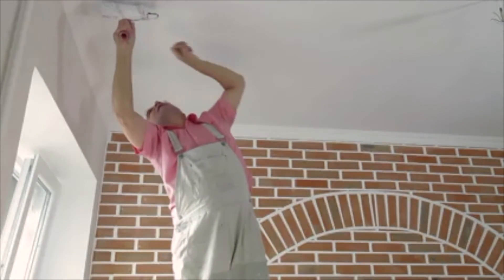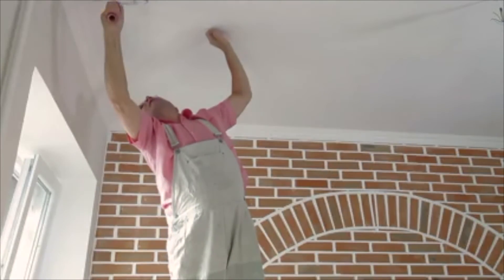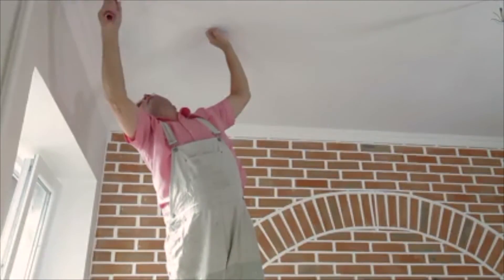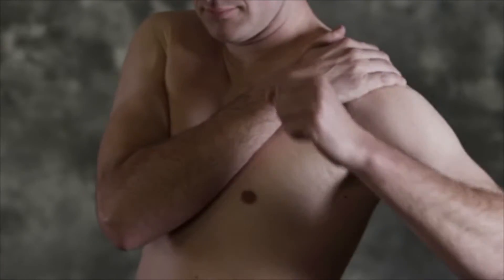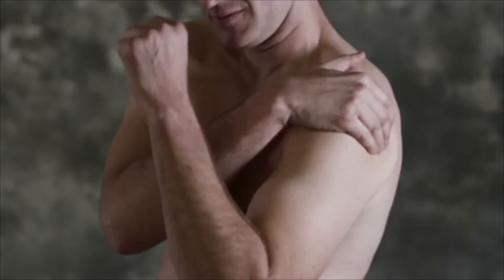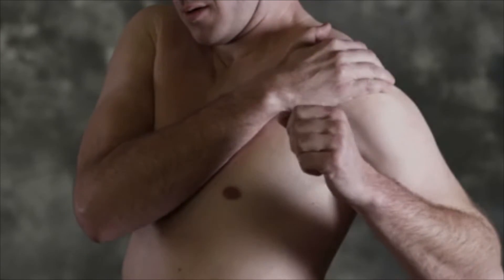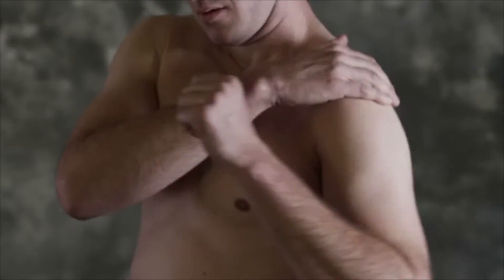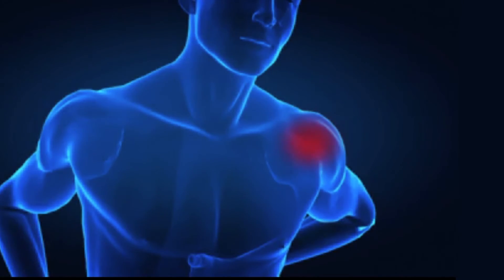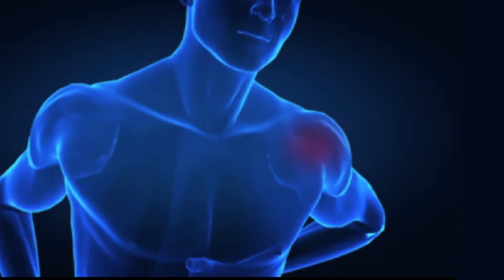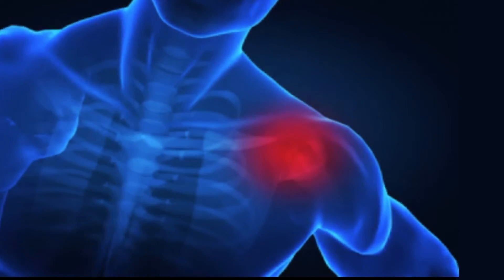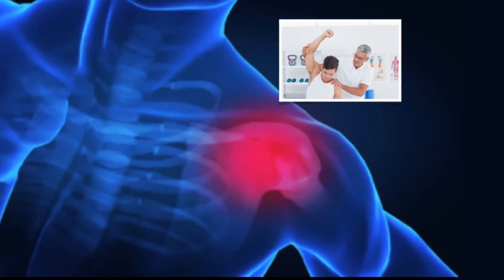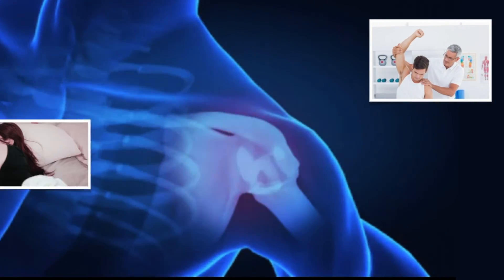Chronic rotator cuff injuries often begin silently, with symptoms becoming more noticeable as the tear progresses. Pain is often localized to the front and outside of your shoulder and can sometimes radiate into your arm. Symptoms are usually aggravated by overhead activity and may progress to the point that you have difficulty lifting your arm or even sleeping.